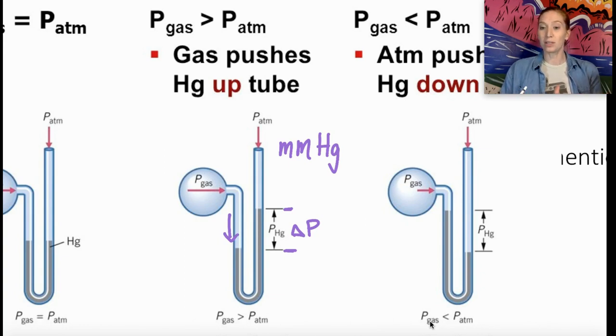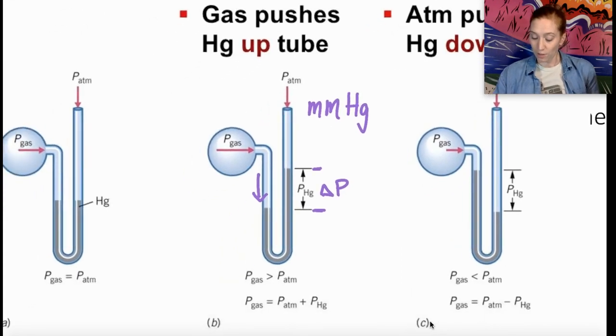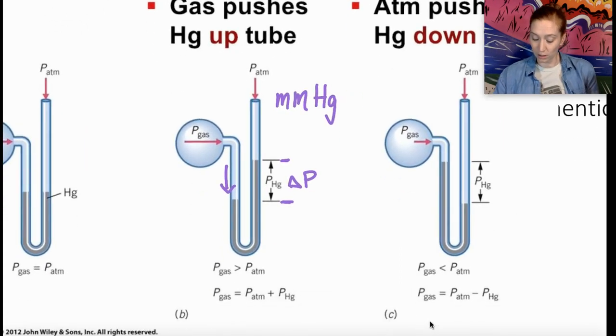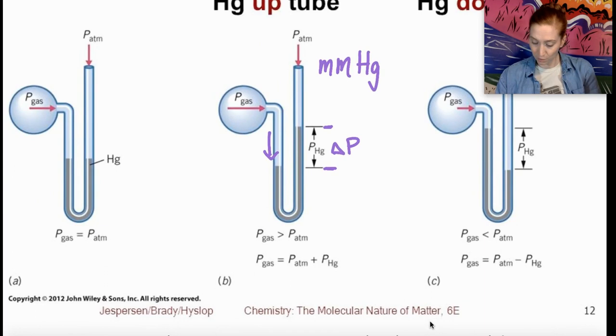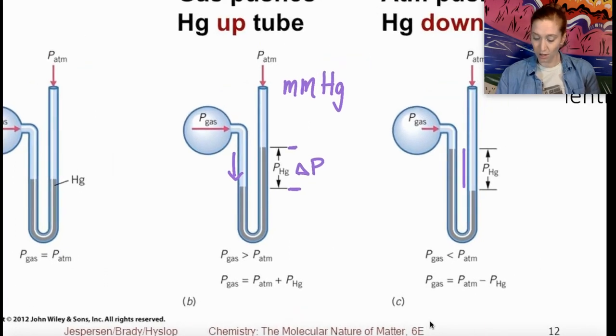If we wind up with the opposite scenario, where the level of the mercury is lower on the side that's open to the atmosphere, that tells us that the atmospheric pressure is greater than the pressure of the gas inside the manometer. So you're going to do the same thing in reverse. You're going to find the difference in the pressure by finding the difference in the height of the columns of mercury. And this time to find the pressure of the gas on the inside, you're going to subtract that difference from the atmospheric pressure.